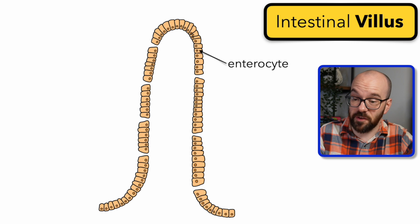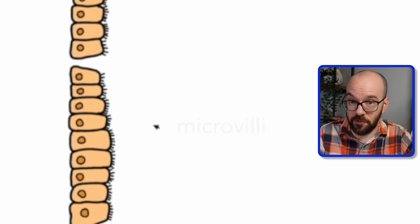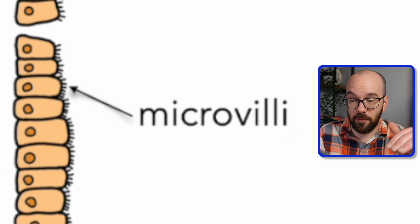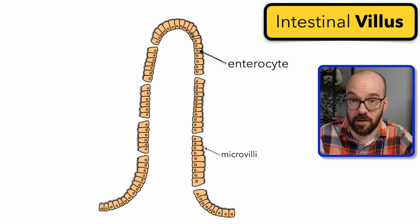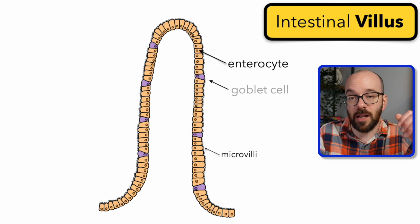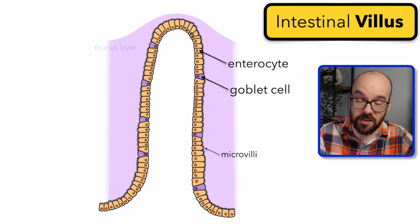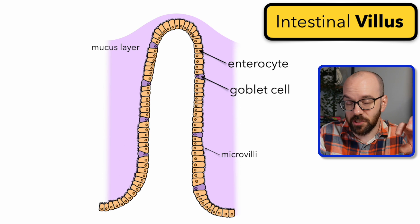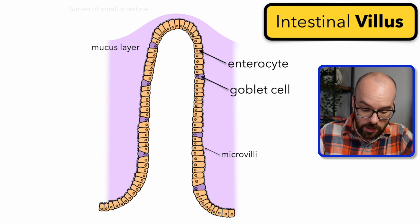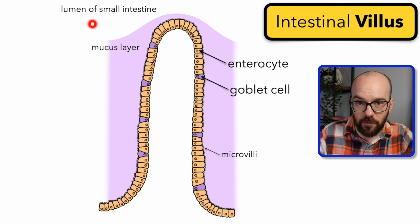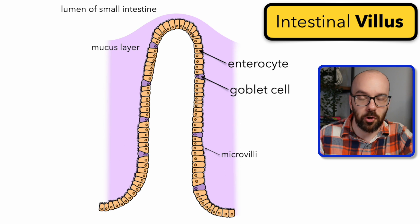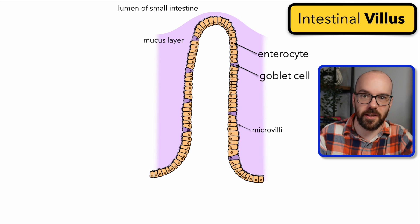To further increase the surface area, enterocytes have microvilli on them. This whole structure is the villus, and microvilli are the tiny hair-like extensions coming out of those enterocytes. We also have goblet cells, which secrete mucus to give a mucosal lining to our small intestine — and a lot of digestion takes place in that mucosal lining. Above the mucus layer is the lumen, which is just the space within the small intestine.